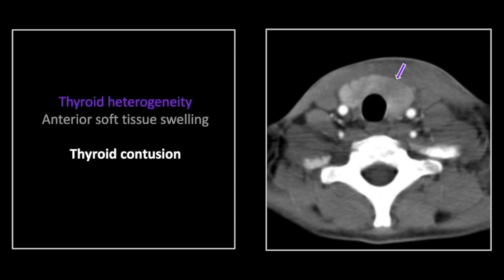There is diffuse enlargement of the entire thyroid gland, and there is an ill-defined region of hypodensity involving the left thyroid lobe and a portion of the isthmus. There is also significant anterior soft tissue swelling.